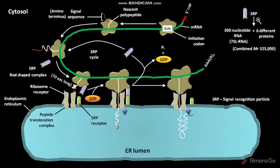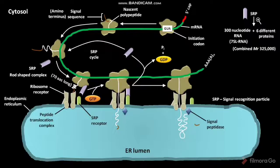Along with the resumed polypeptide chain elongation, the peptide translocation complex uses ATP to feed the growing polypeptide into the ER lumen until the complete protein has been synthesized. The luminal face of the endoplasmic reticulum has a signal peptidase, which removes the signal sequence from the polypeptide.